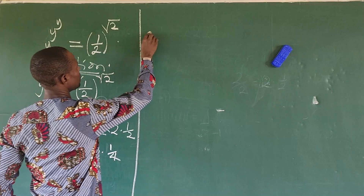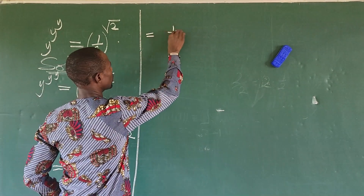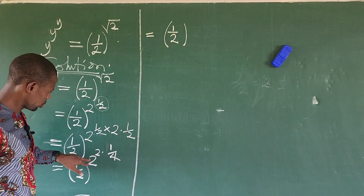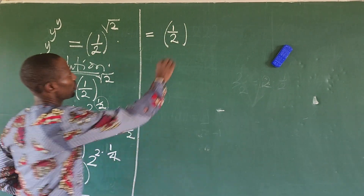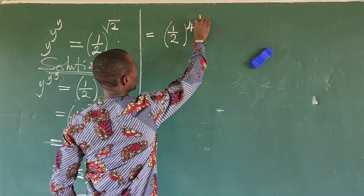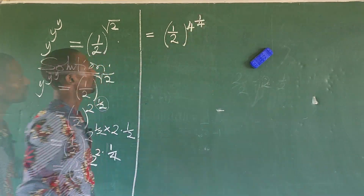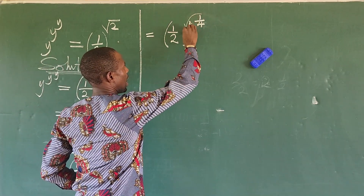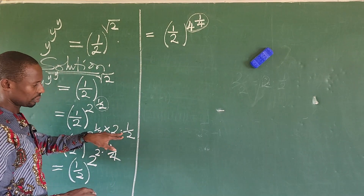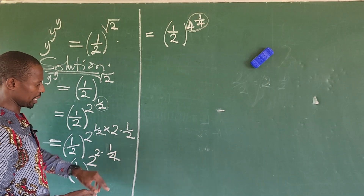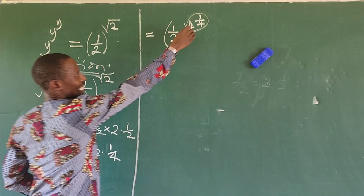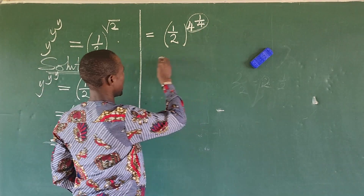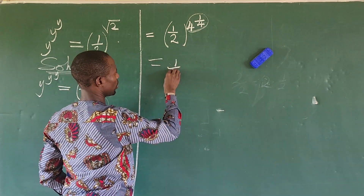This now implies that 1 over 2, raised to the power of 2 — and 2 raised to power 2 is 4 — so we have 1 over 4, all raised to 1 over 4. At this point, I want to multiply the exponent by 2 times 1 over 2 again, so I rewrite this as 1 over 2 bracket 4 to the power of 1 over 4, times 2 dot 1 over 2.